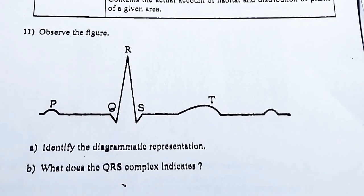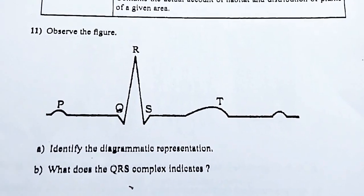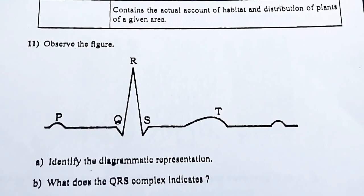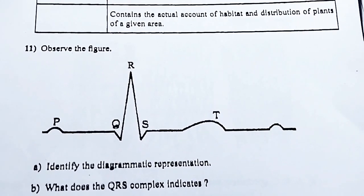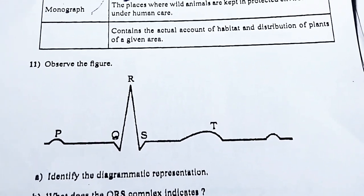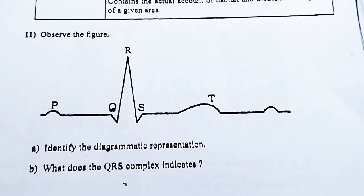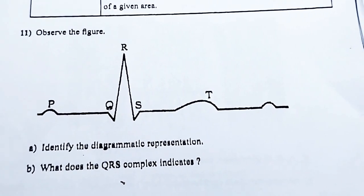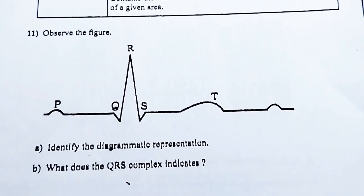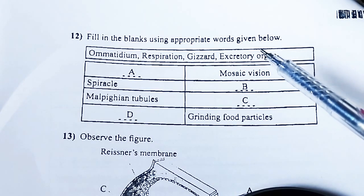Question 12: Identify the diagrammatic representation. This is the standard ECG diagram. What does the QRS complex indicate? The answer is the depolarization of ventricles.